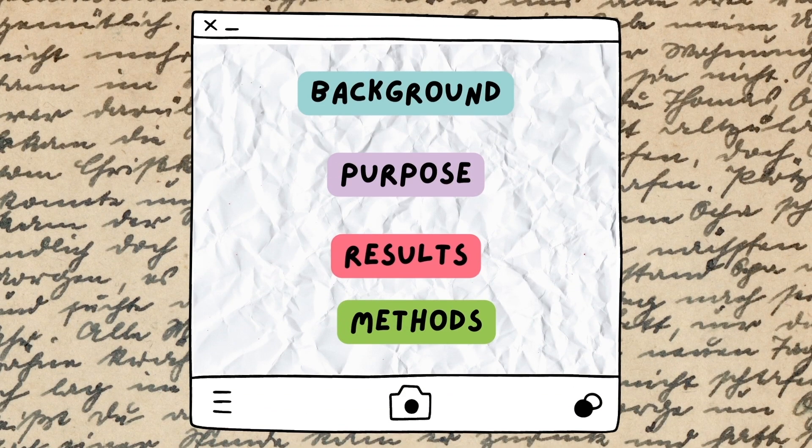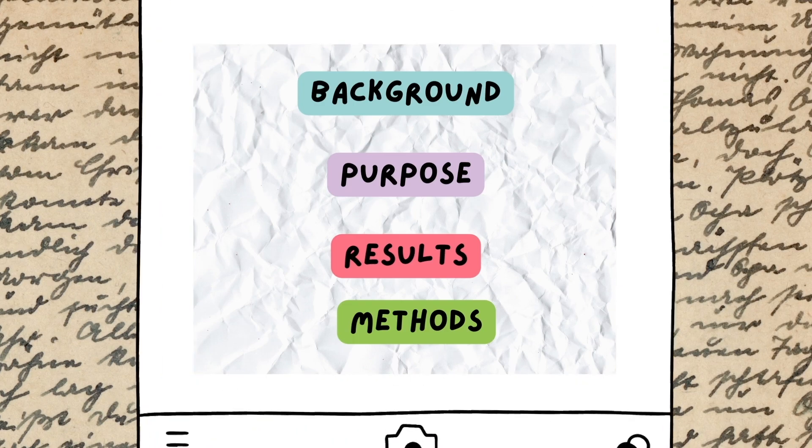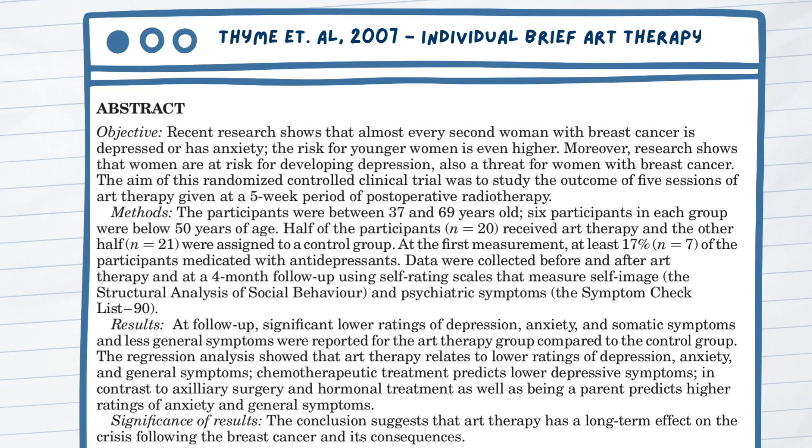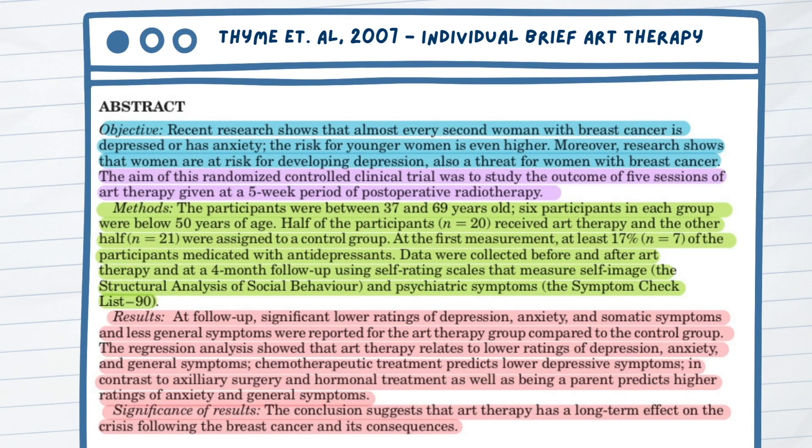While you read the abstract, be sure to have four different colors of highlighters or pencils available so that you can visually separate the information presented in the abstract. I usually use blue to represent any background information, purple to note the purpose or research question of the article, red to underscore the results from the study, and green to highlight what methods were used in the paper. If these sections are not already clearly labeled for you, you can differentiate between them in the abstract based on key words used by the investigators.